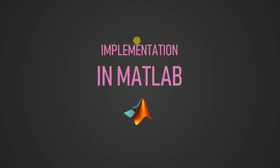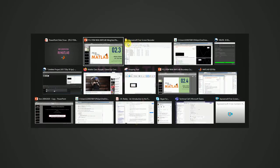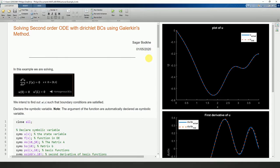Now we'll see how to implement both parts of example two in MATLAB, similar to what we did with the least squares method earlier. The equation is a second-order ODE with homogeneous boundary conditions, which we have already discussed.